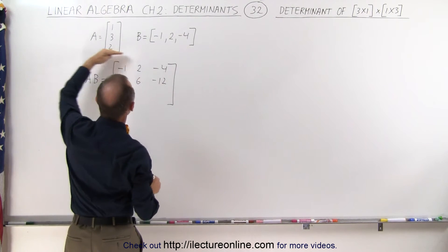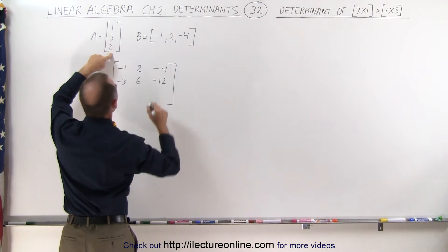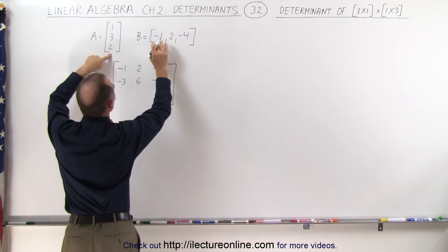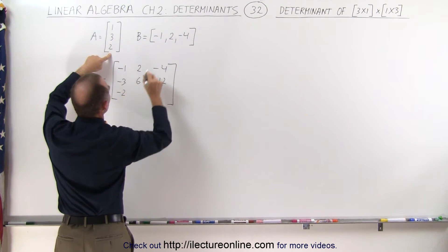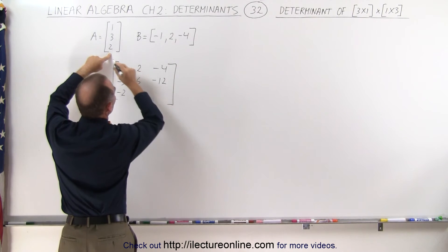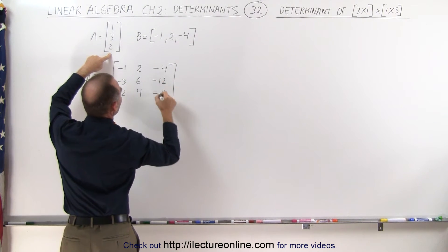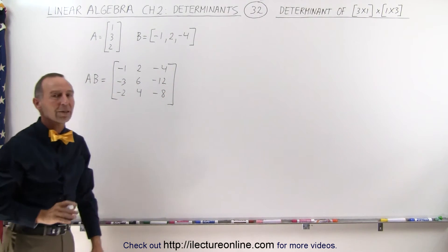Finally to get the three elements in the third row we multiply this times these three elements: 2 times negative 1 is negative 2, 2 times 2 is 4, 2 times negative 4 is negative 8. So there's our 3 by 3 matrix.